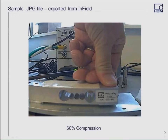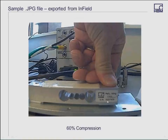Here is a sample of one of the images we exported — this is the 640x480 at 60% compression. The focus is decent enough that we can actually pick out the serial number and model, the PWL 50, on the load cell itself.